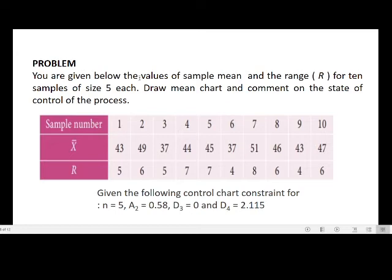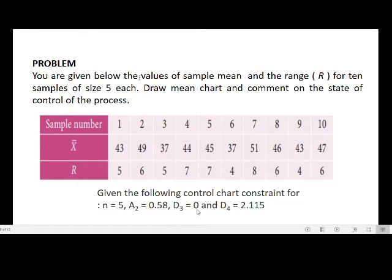Next problem: You are given the values of sample mean and range for 10 samples of size 5 each. Draw a mean chart and comment on the state of control of the process. Sample means: 43, 49, 37, 44, 45, 37, 51, 46, 43, 47. Ranges: 5, 6, 5, 7, 7, 4, 8, 6, 4. Given constants: n = 5, A₂ = 0.58, D₃ = 0, D₄ = 2.115.